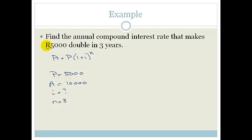If they just said find the annual compound interest rate that makes an investment double in three years, then our principal would be x and our amount would be 2x. Our i would still be question mark and n would be three.